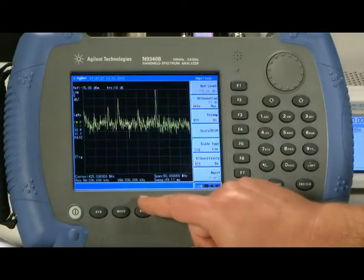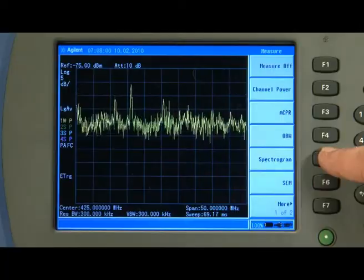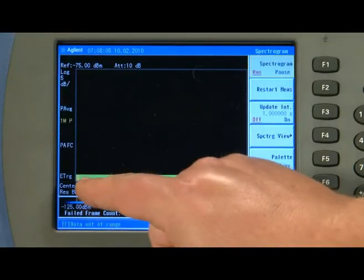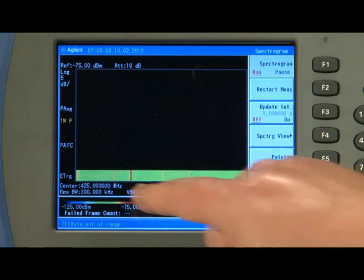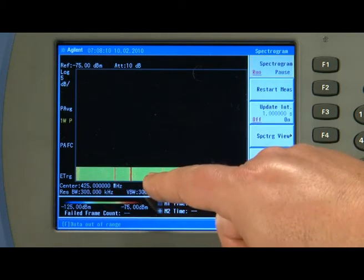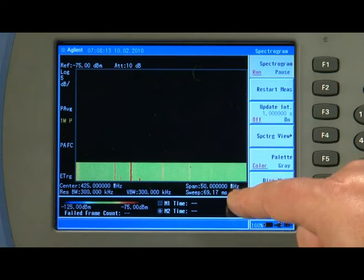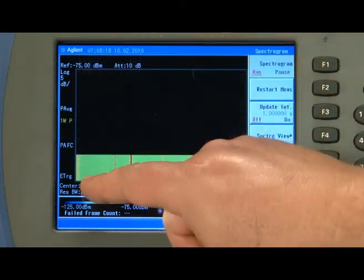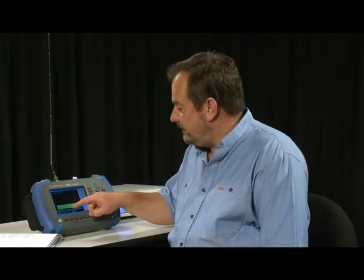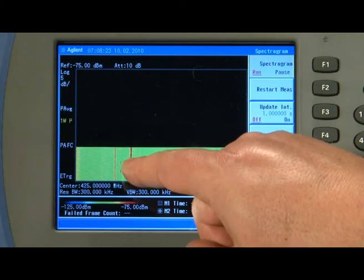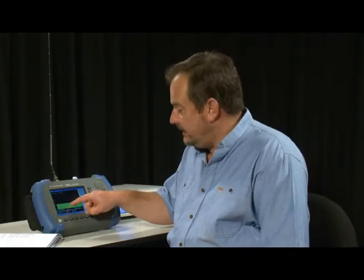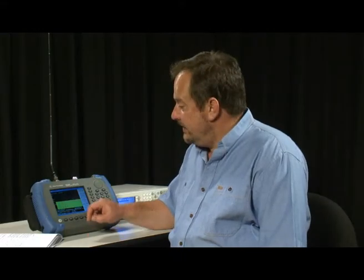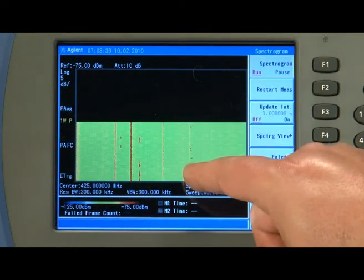Now to turn on spectrogram, we just press the measure button and then press spectrogram. And what's happening now is that we still have the frequency spectrum on the X axis of the display, with a centre frequency of 425 MHz and a span of 50 MHz. But on the Y axis, instead of showing amplitude, we now have time. Amplitude is in fact displayed by the colour of the trace. So green is a weak signal and red is a strong signal. You can see already that we have a number of continuous transmitters shown on the display. And these red dashed lines show transmitters that are turning on and off.